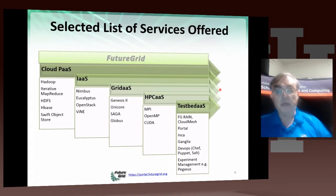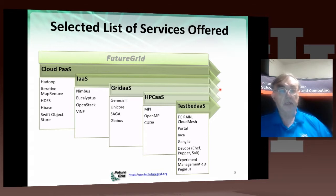Here are the various services we offer. We offer cloud services including MapReduce, the Hadoop file system, HBase, and the Swift Object Store. For infrastructure as a service, we offer Nimbus, Eucalyptus, OpenStack, and also the virtual networking system Vine.